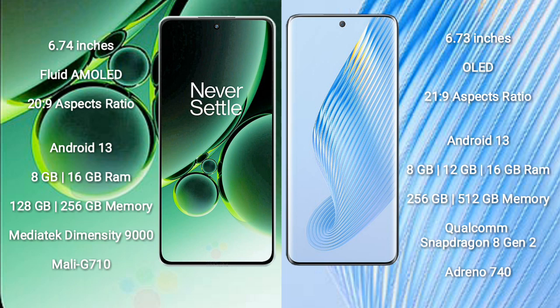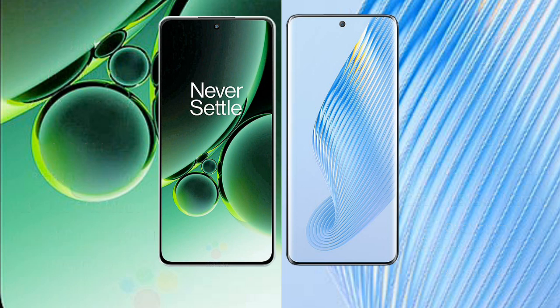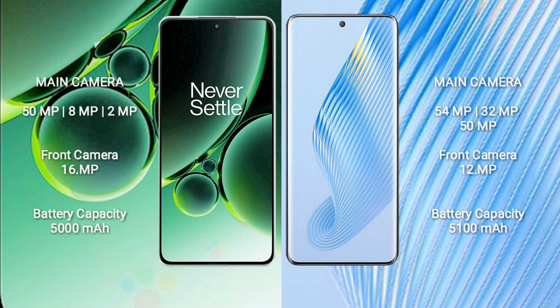Honor Magic 5 comes with 8GB, 12GB, or 16GB RAM and 256GB or 512GB internal storage, powered by the Qualcomm Snapdragon 8 Gen 2 processor with Adreno 740 GPU.